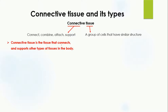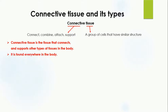Connective tissue is the tissue that connects and supports other types of tissues in the body. It connects two or more different types of tissues together. For example, we have one kind of tissue here and another kind of tissue elsewhere in the body — these two tissues are connected with each other by the help of connective tissue.